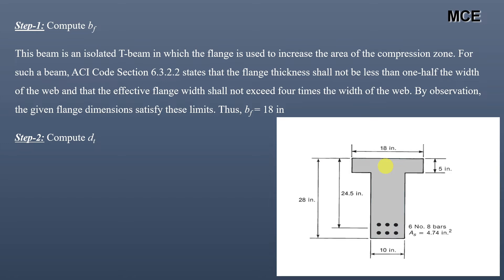The next step is to find DT, the distance to the extreme layer of tension steel from the top of the beam. For this beam, this equals the effective depth (already given), which is the distance from the top to the centroid of the tension steel, plus half the clear spacing between the two layers of reinforcement, plus half the diameter of the bar. Since ACI code states clear spacing between layers shall be ≥ 1 inch, half of that is 0.5 inch. This is a No. 8 bar with diameter 1 inch, so half is 0.5 inch. Therefore DT = 24.5 + 1 = 25.5 inches.